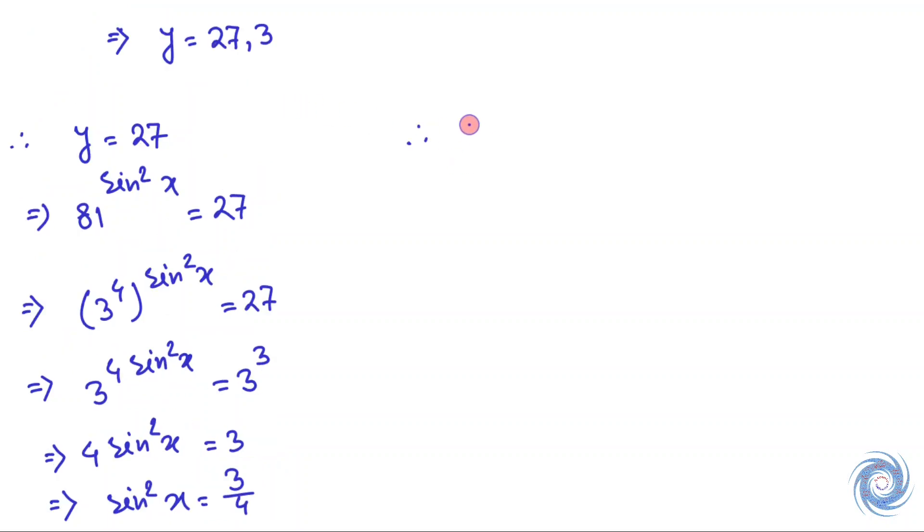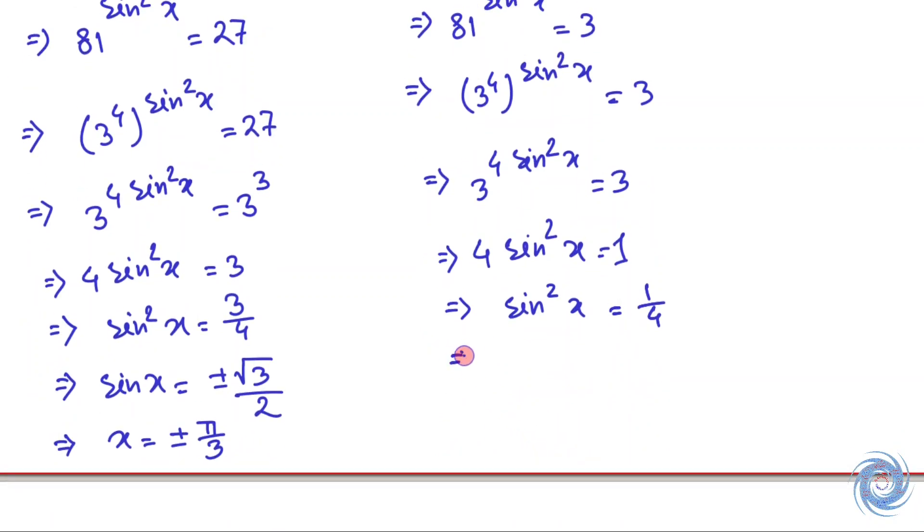Now we will solve for y = 3. 81^(sin²x) = 3, and from here we have (3⁴)^(sin²x) = 3¹, which gives 4sin²x = 1, so sin²x = 1/4, and x = ±π/6.